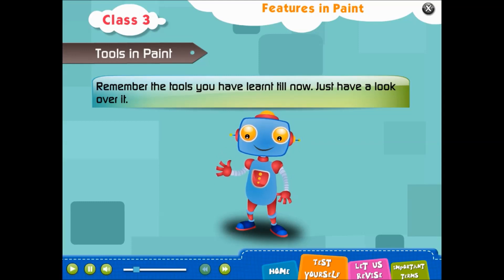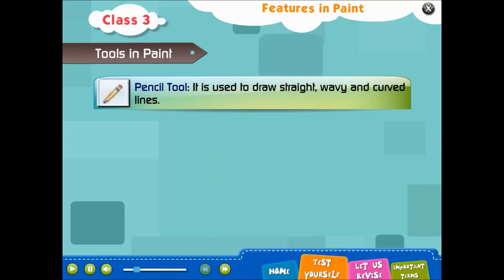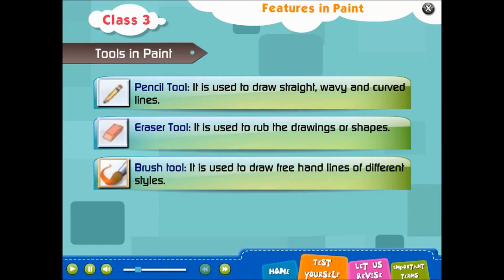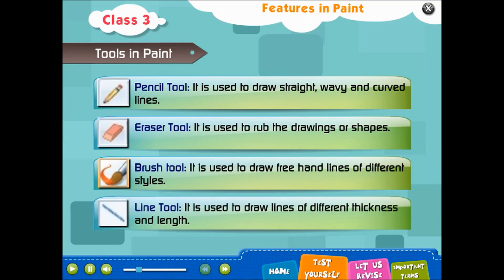Tools in Paint - remember the tools you have learned till now. Pencil tool: it is used to draw straight, wavy, and curved lines. Eraser tool: it is used to rub the drawings or shapes. Brush tool: it is used to draw freehand lines of different styles. Line tool: it is used to draw lines of different thickness and length.